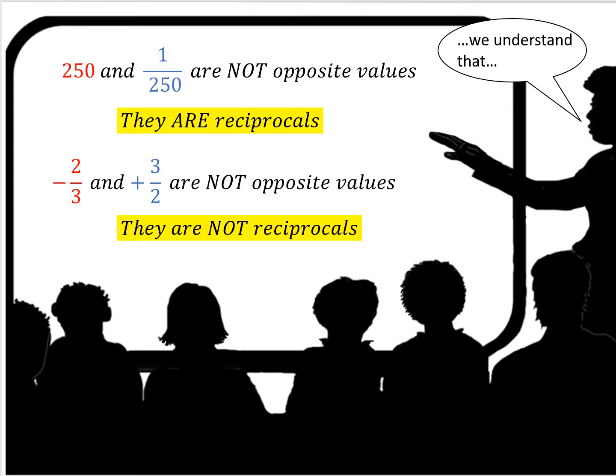Negative two-thirds and positive three-halves — those are not opposite values. They're also not reciprocals.